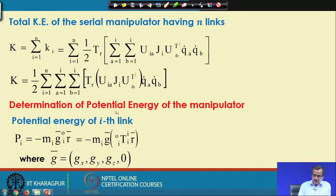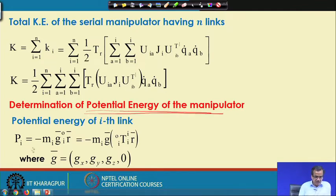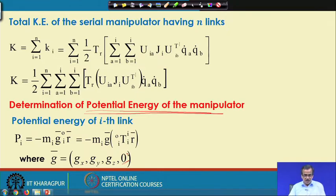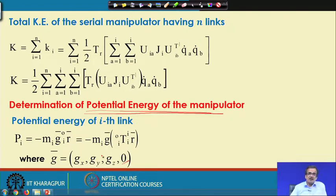Now we are going to find out the potential energy of the manipulator. The potential energy Pi is nothing but minus Mi, g_bar, Ri with respect to 0. Here g is the three components of acceleration due to gravity. At a particular place, gx and gy are negligible, so we generally consider only gz, which is acting vertically downward.